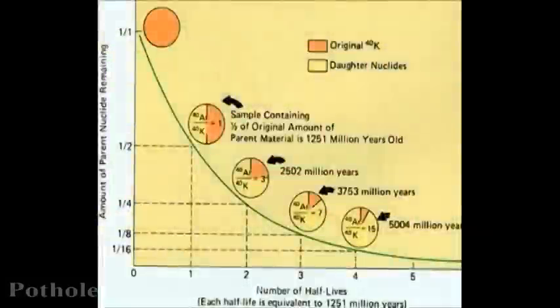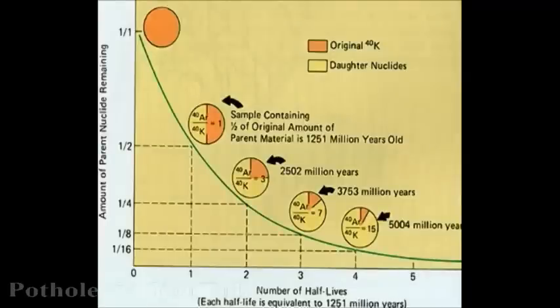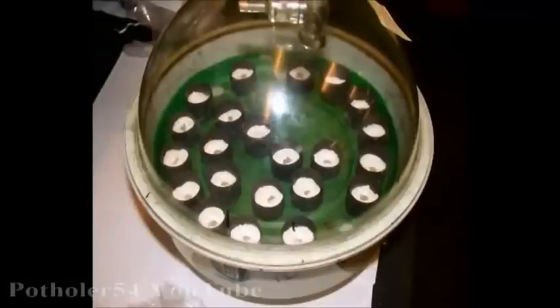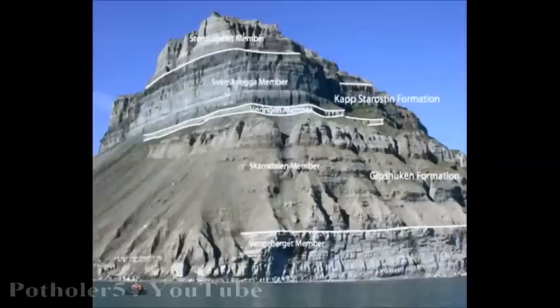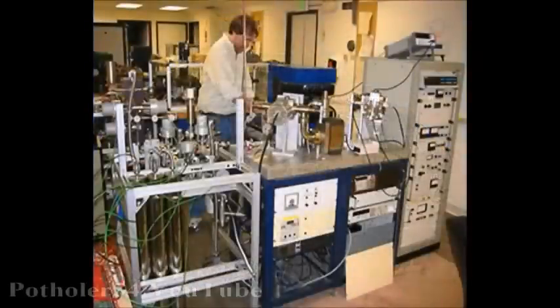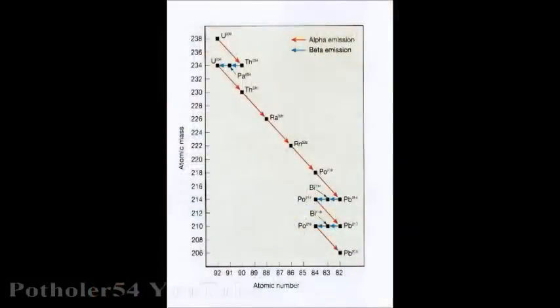Potassium-Argon dating works on the same principle as carbon dating, but instead of carbon decaying to nitrogen, we have potassium decaying to argon, and instead of a half-life of 5,500 years, we have a half-life of 1.3 billion years. That means the method can be used for dating rocks and fossils hundreds of millions of years old. The technique has largely been replaced with the far more accurate Argon-Argon method, and there are other decay processes that can be measured, each with different half-lives, such as uranium-thorium and rubidium-strontium.